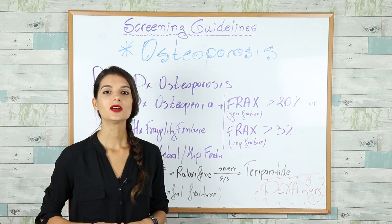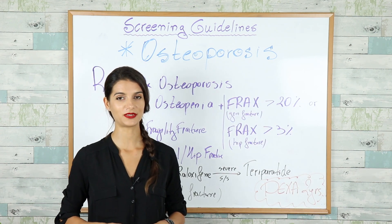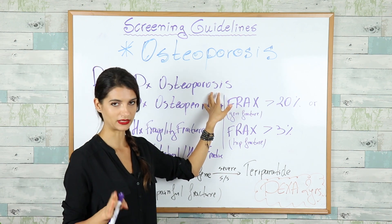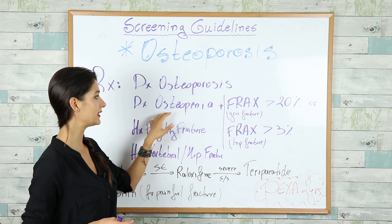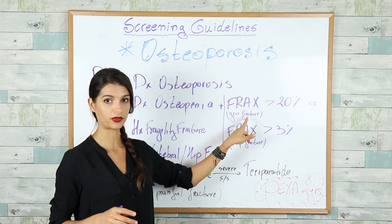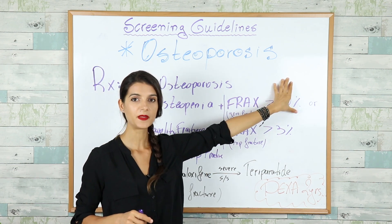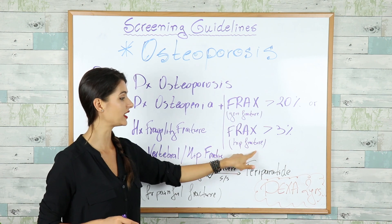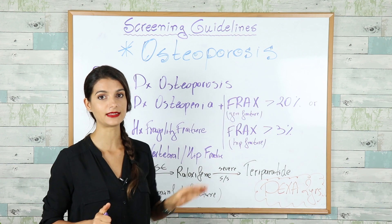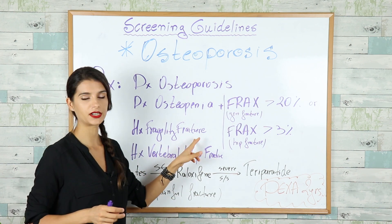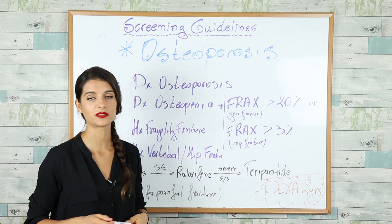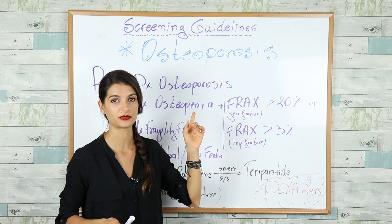We treat patients with diagnosed osteoporosis based on the DEXA T-score, or patients diagnosed with osteopenia who additionally have a FRAX score for general fracture of more than 20%, or a FRAX score for hip fracture of more than 3%. Please remember these numbers — the FRAX score is very heavily tested. We also treat patients with a fragility fracture, also called a fall fracture: if a patient falls and breaks a bone very easily, you start treating for osteoporosis as well.